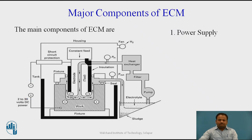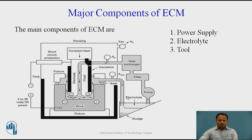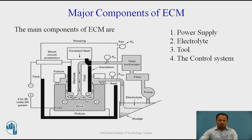This is the electrical supply. Now, Electrolyte — the electrolyte we are using here is NaCl, sodium chloride. Now, Tool — the tool has a very high surface finish and contains an internal hole to pass the electrolyte. The control system gives a constant feed to the work piece to achieve minimum tolerance.